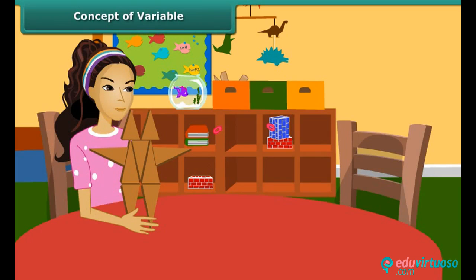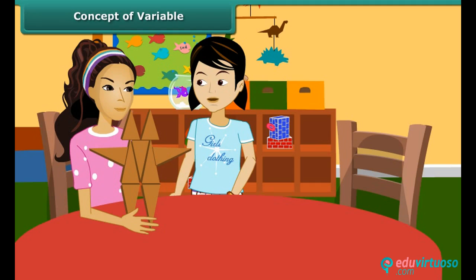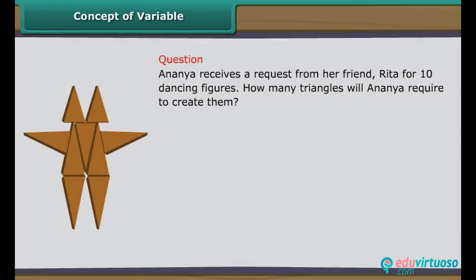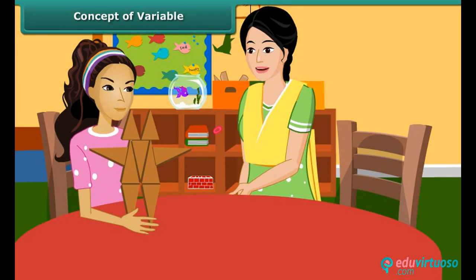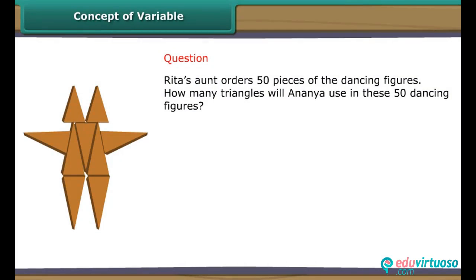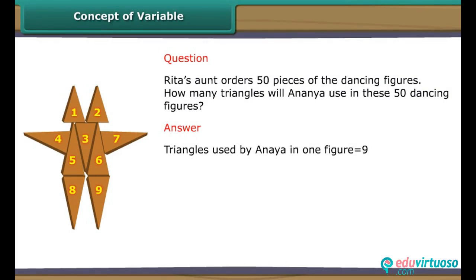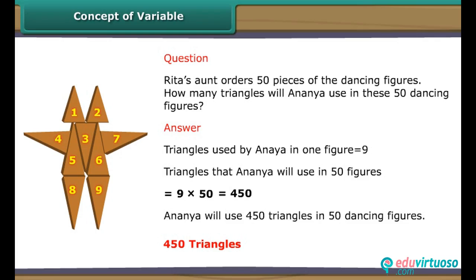Ananya creates dancing figures using triangles made of wood. One day, she receives a request from her friend Rita for ten such dancing figures. How many triangles will Ananya require? Ananya uses nine triangles to create one figure. Therefore, in ten dancing figures, Ananya will use nine into ten, which is equal to 90 triangles. Rita's aunt orders 50 such pieces. Ananya will use nine into fifty, equal to 450 triangles.